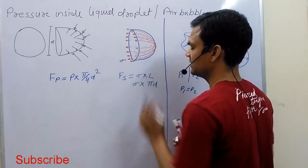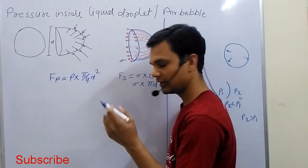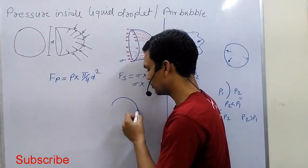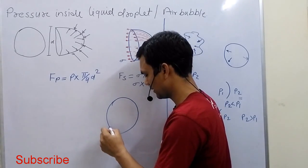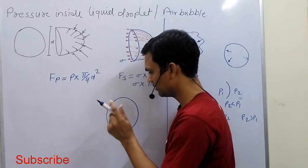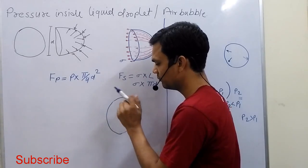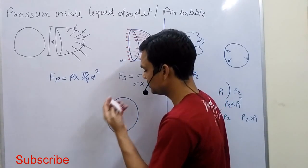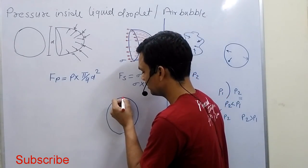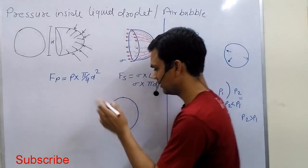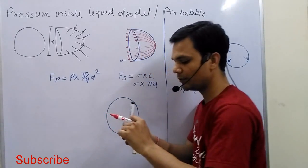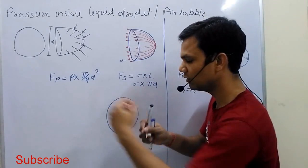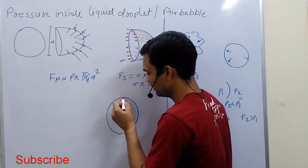To understand surface tension, we consider an analogy. Suppose we take a football and put chewing gum on it. The chewing gum will be drawn on all the sides of the football.